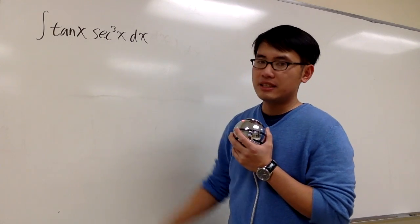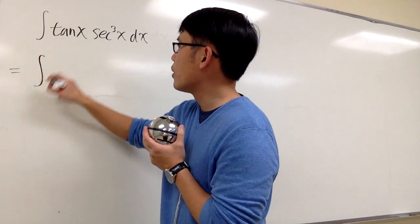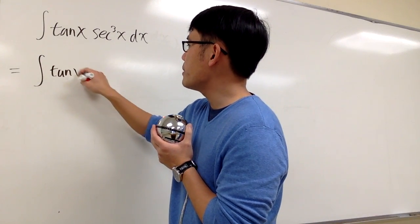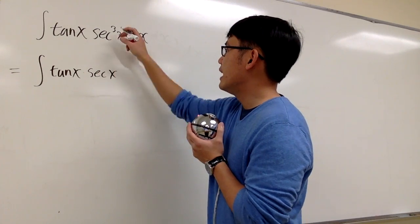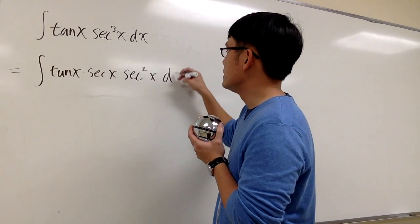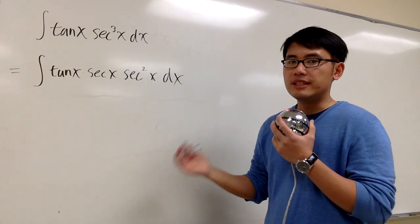How about let me just take out one of the secant? Let me look at this as the following. This is the same as the integral, tangent x stays the same, but let me break this apart as secant x and then secant squared x dx. And of course, this and that are the same, so I didn't change anything.